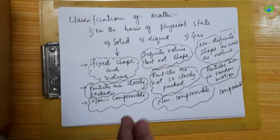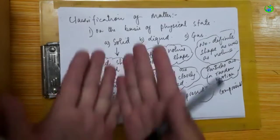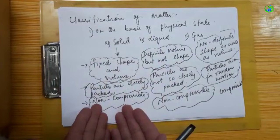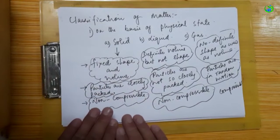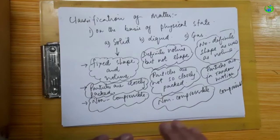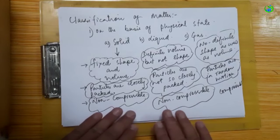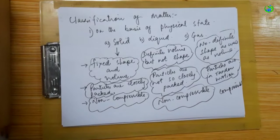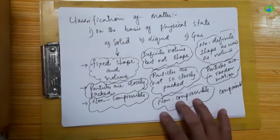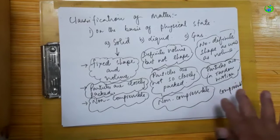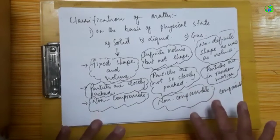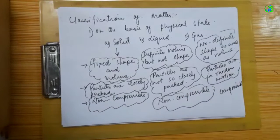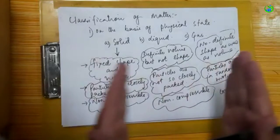Looking at the properties: solids are non-compressible — they cannot be compressed under pressure. Liquids are also non-compressible generally. However, gases can be compressed — they can be compressed under pressure.